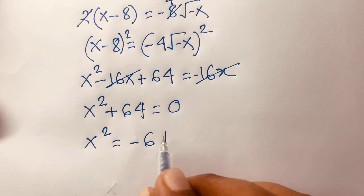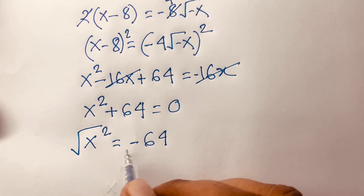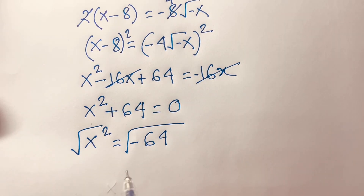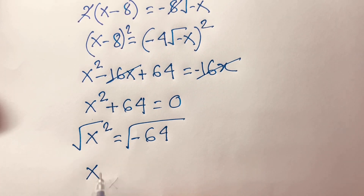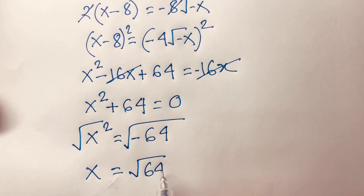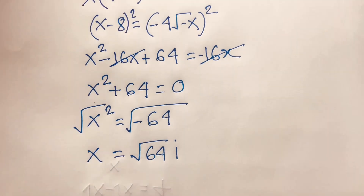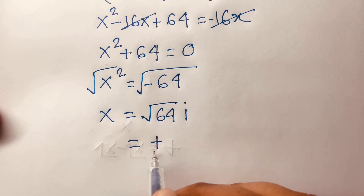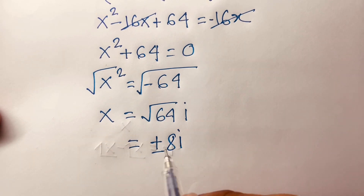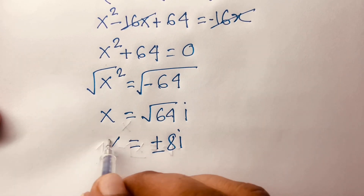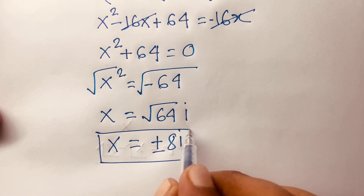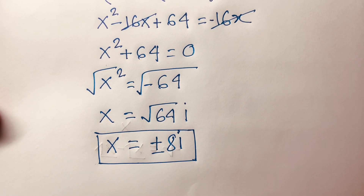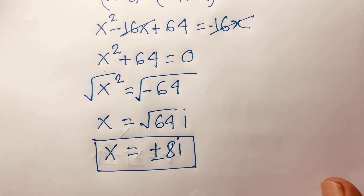Therefore x² is equal to minus 64. Taking the square root of both sides, x is equal to square root of minus 64, which gives us x is equal to plus or minus 8i. This is our final answer.